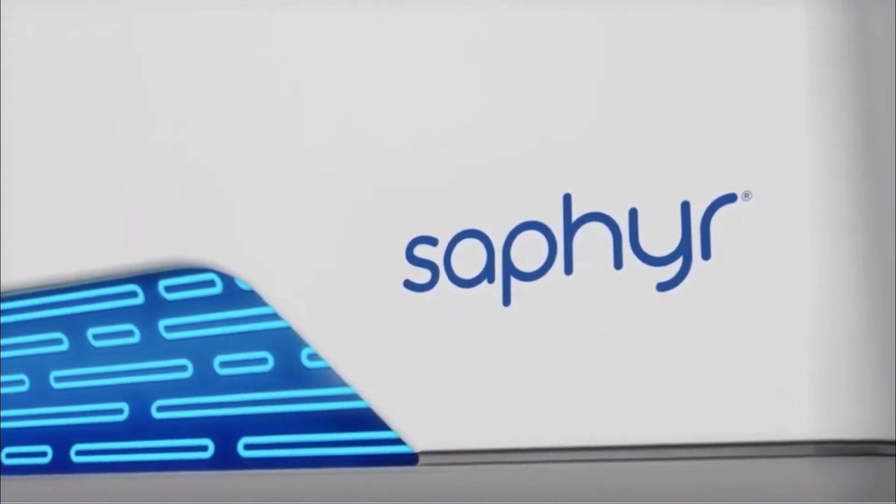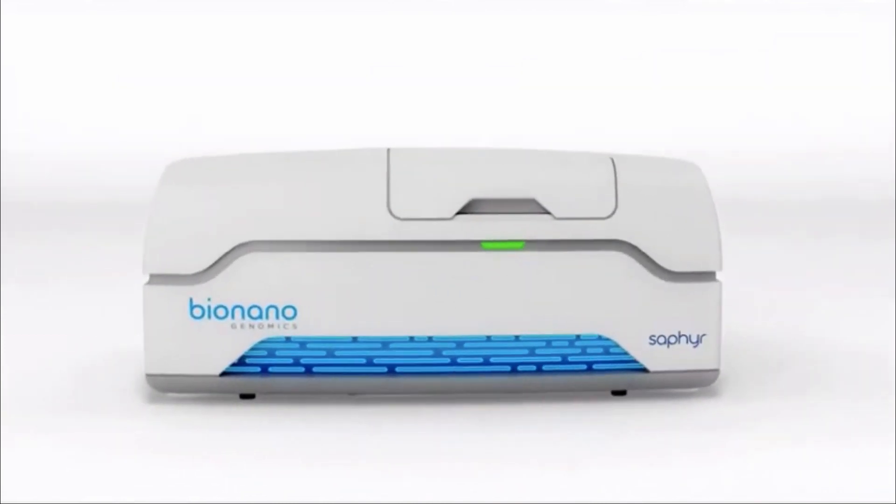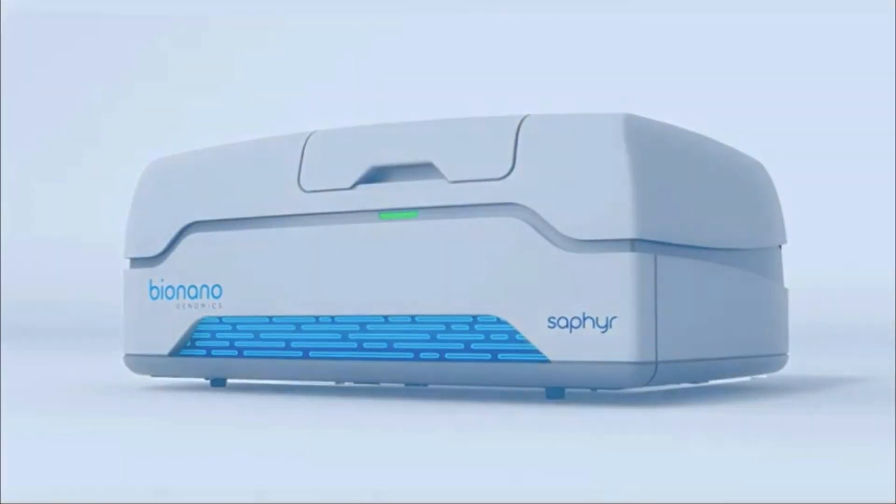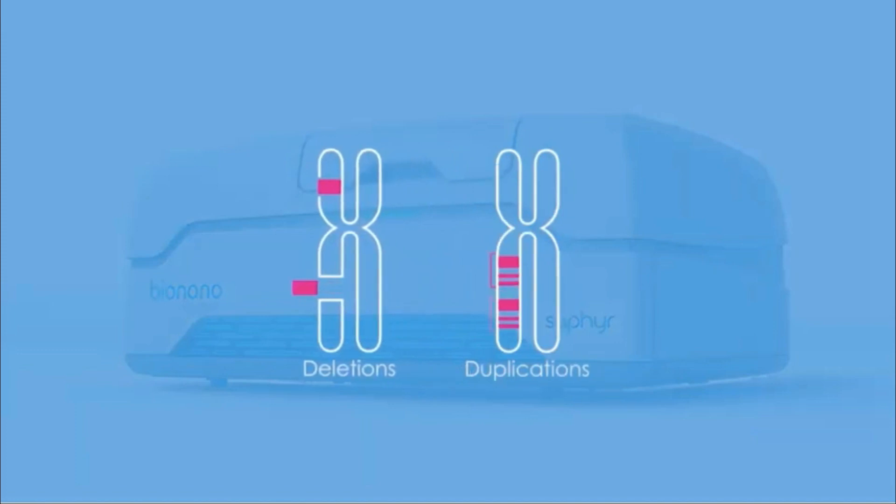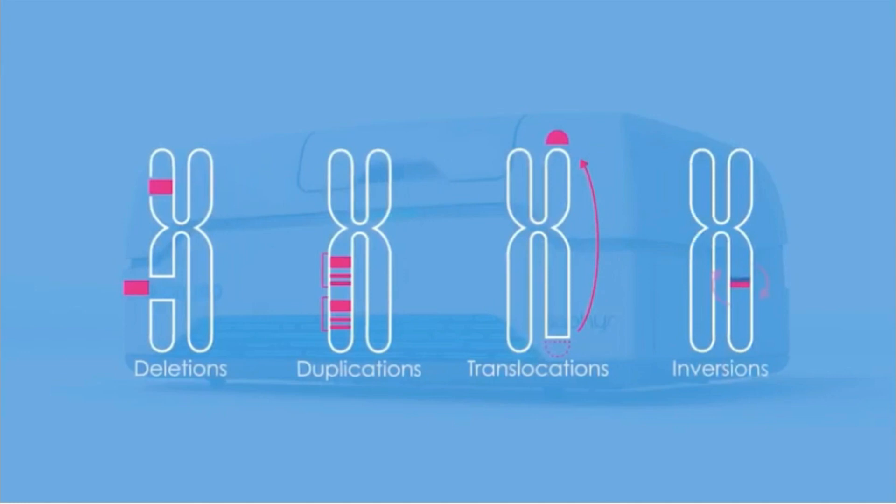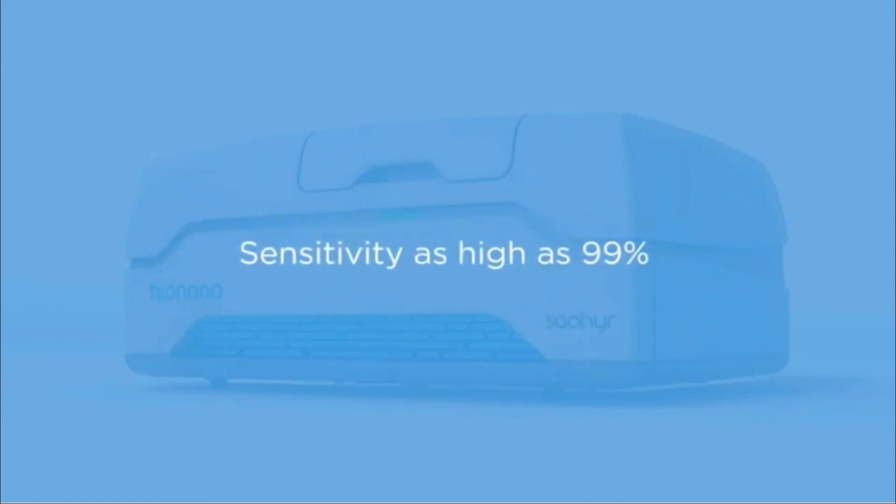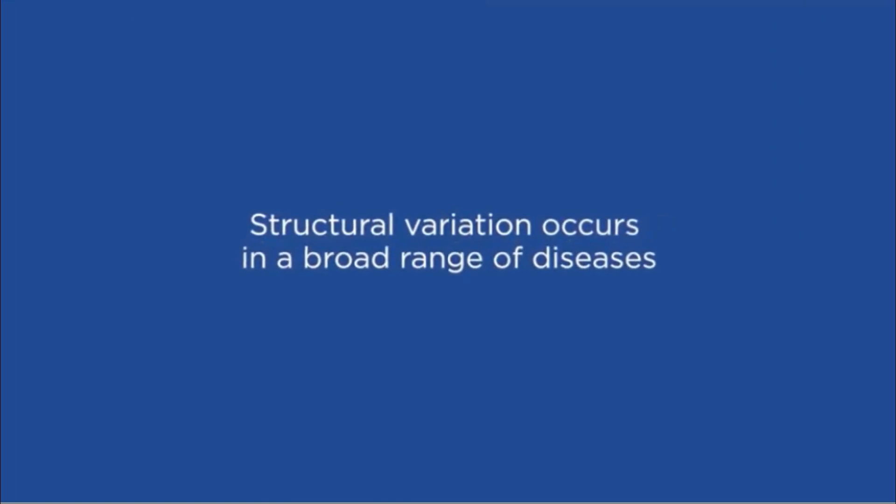This is Saphyr from BioNano Genomics. With it, you can directly image the genome at high resolution to detect variations such as deletions, duplications, translocations, and inversions, known as structural variations, with sensitivity as high as 99 percent. The process is simple and automated to enable routine use in disease research.